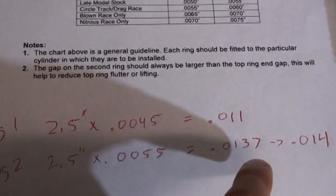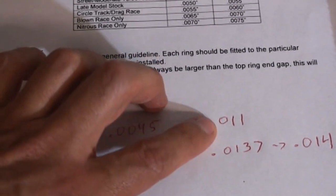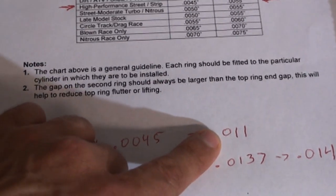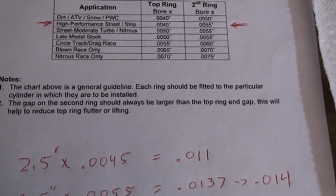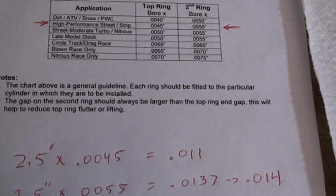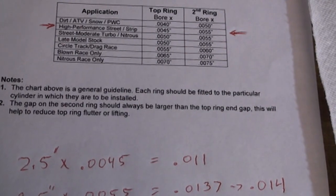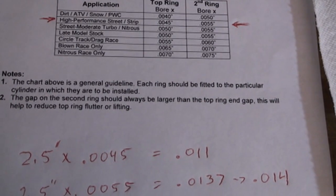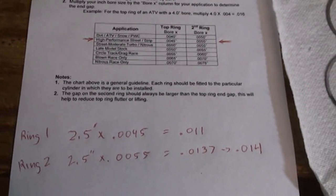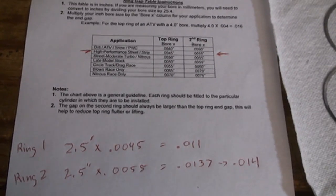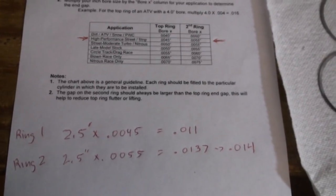The biggest and most important thing is that your second ring has a larger gap than your top ring. And you want to know why? Right there. The gap in the second ring should always be larger than the top. This will help reduce top ring flutter and lifting. Basically, it'll make everything work correctly, last longer. Don't get air gaps in their pockets. Basically, if you have over pressure in your top ring, it needs to be able to shoot through by your second ring so that the rings don't fail.